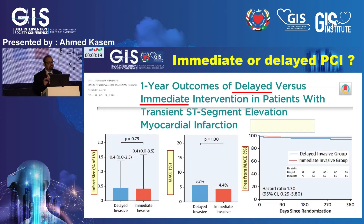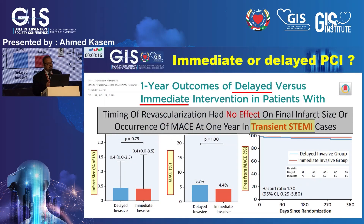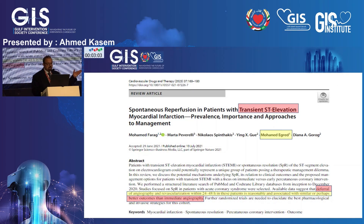The question for transient TIMI: shall we go for immediate or delayed PCI? Data show there is no effect of timing of revascularization in transient STEMI in terms of infarction size or occurrence of major adverse events. An important paper by Dr. Egred states that deferral of angiography and revascularization to within 24–48 hours in patients with transient STEMI may yield better outcomes than immediate angiography, especially with bulky thrombus.